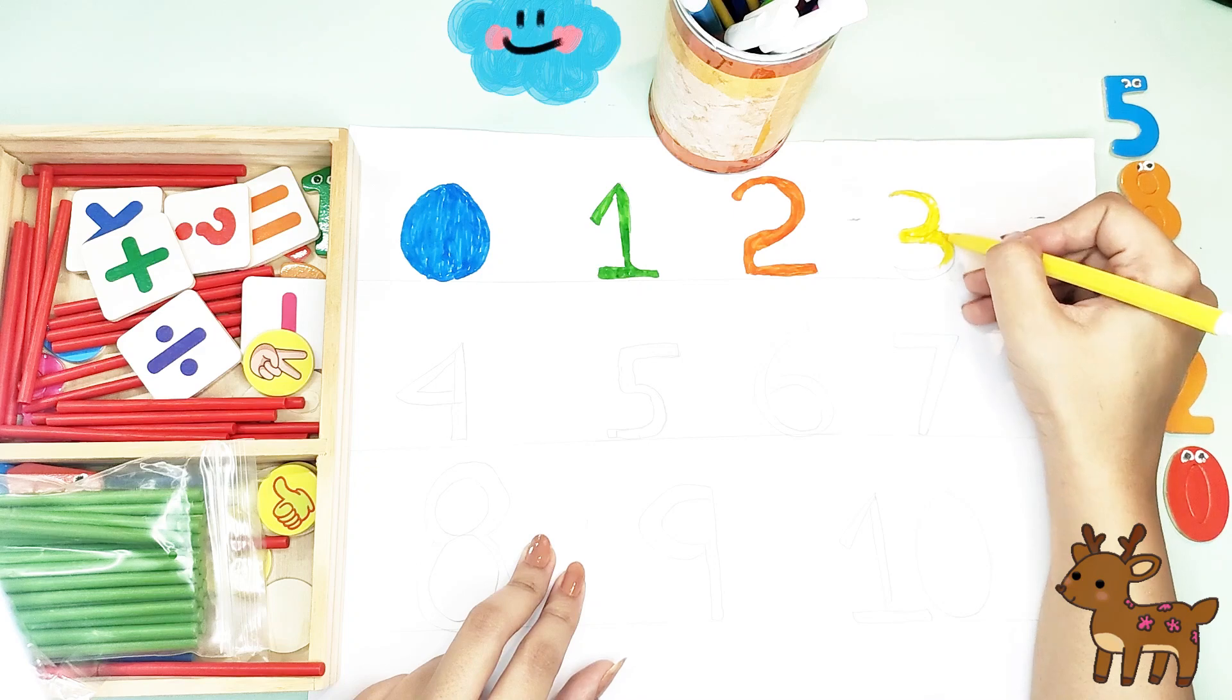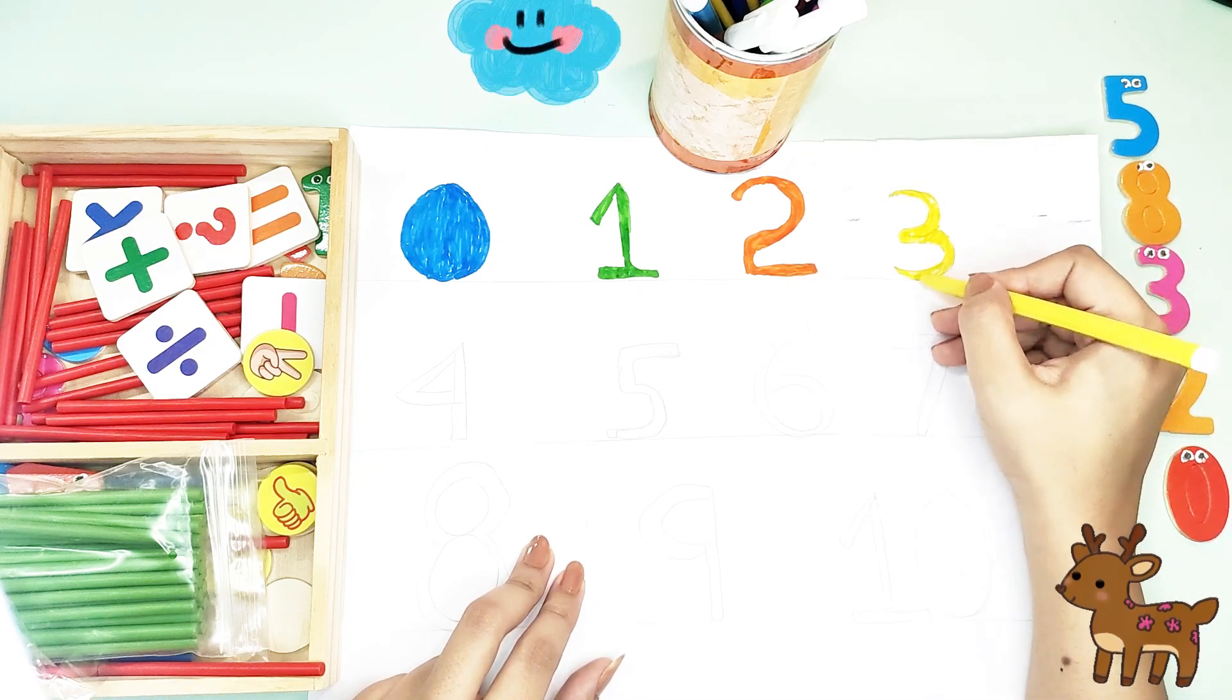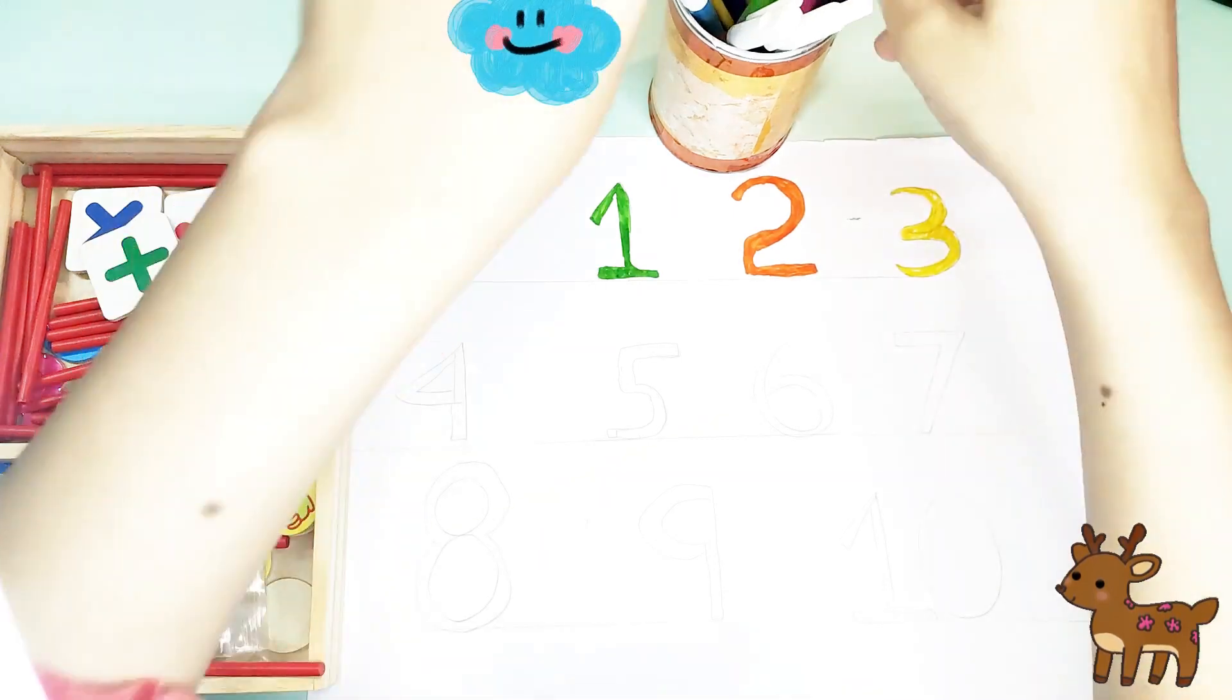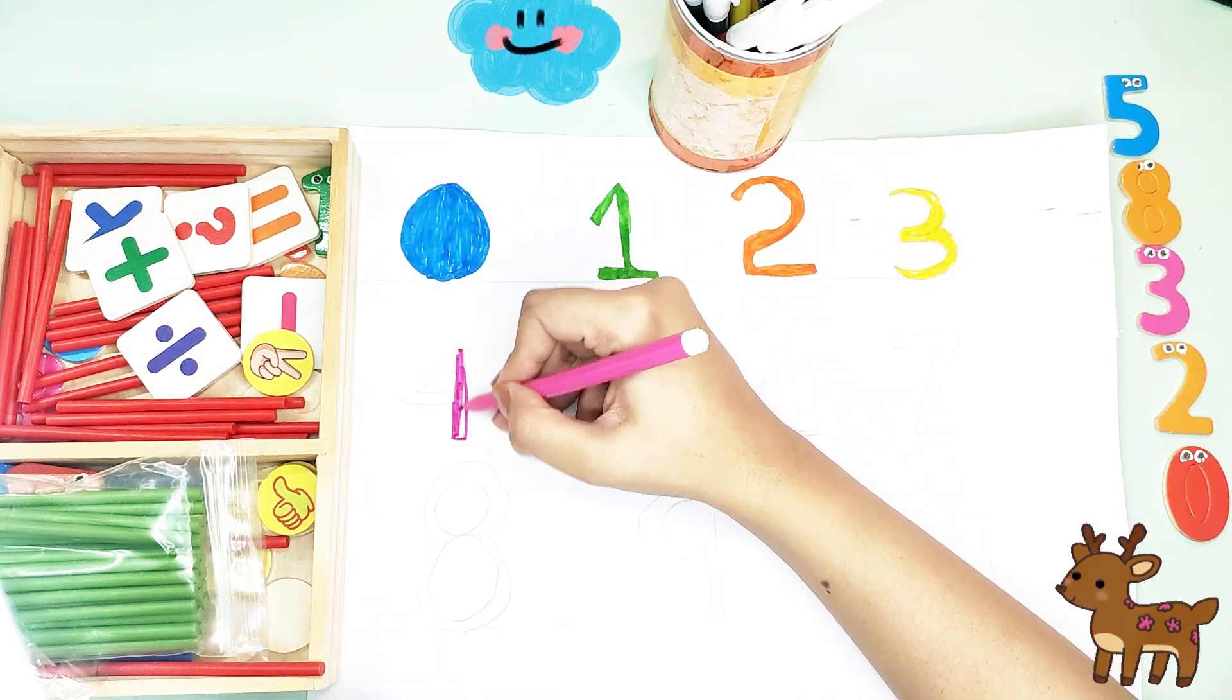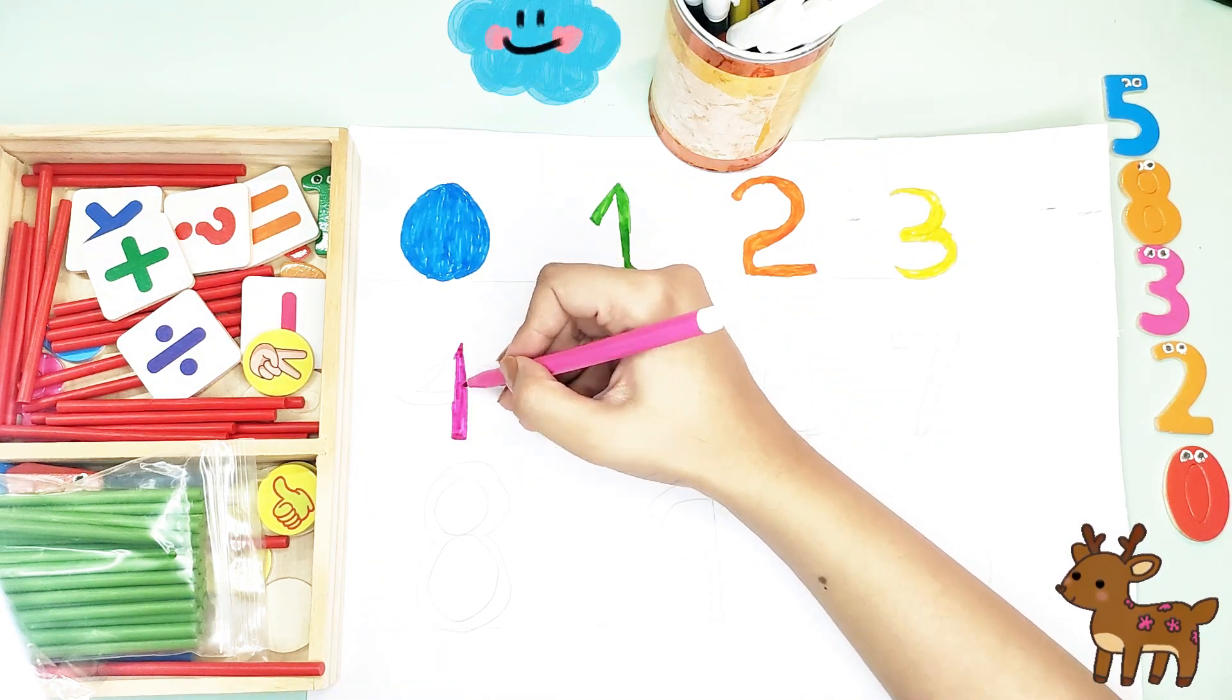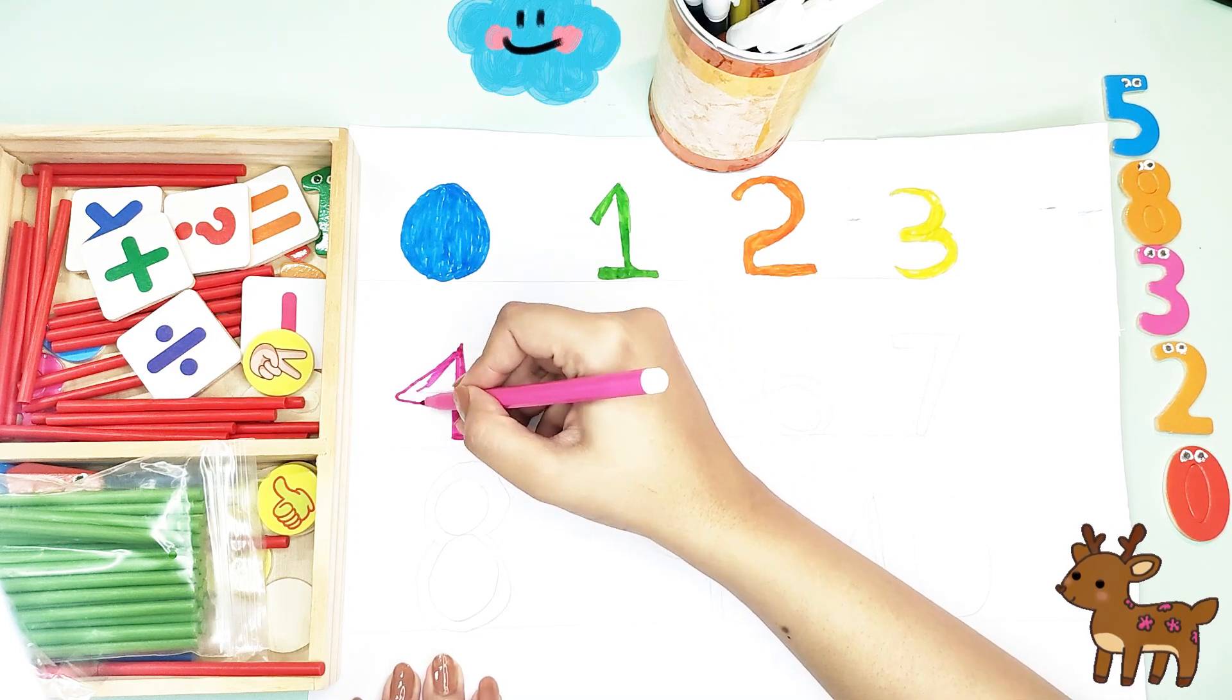Three. Good. Four. Yellow color in number three and then the pink color in number four. That's how you write down number four.